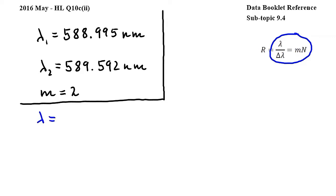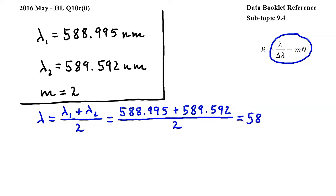Let's find lambda, the average or mean of the two given wavelengths. To calculate this we will add lambda 1 and lambda 2 and divide the result by 2. So we get 588.995 plus 589.592 divided by 2 which gives us 589.2935.